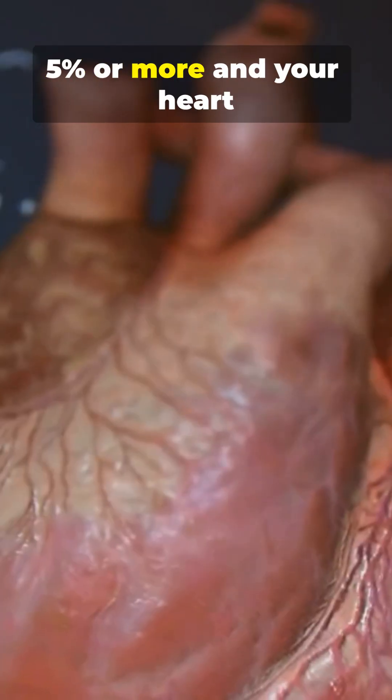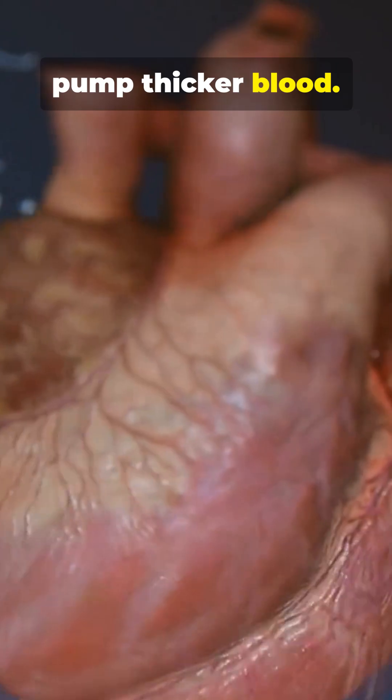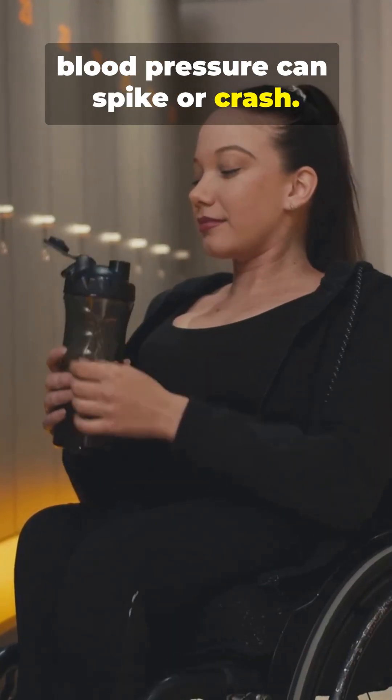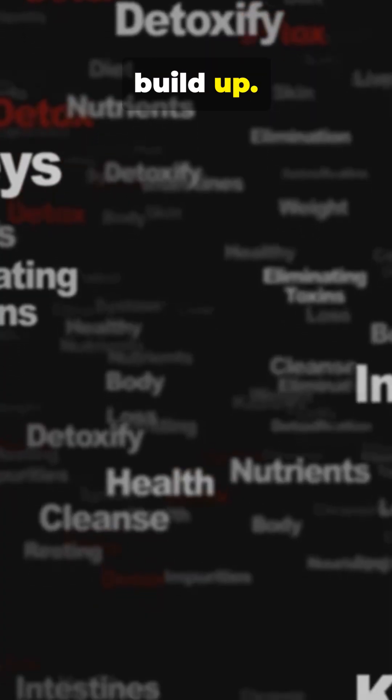5% or more, and your heart races as it works harder to pump thicker blood. Blood pressure can spike or crash. Your kidneys start hoarding water, urine darkens, and toxins build up.